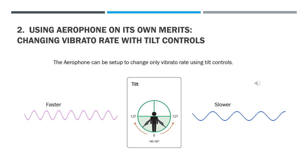The next illustration shows that vibrato rate can be changed using tilt controls. For example, by tilting the Aerophone left, we can increase the rate; by tilting right, we can decrease it. The vibrato rate in the center position will depend somewhat on where the instrument was last tilted.